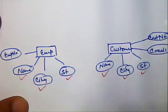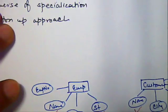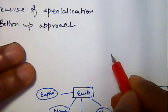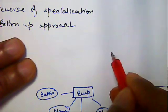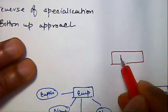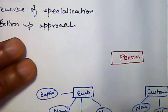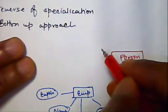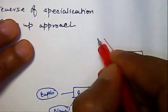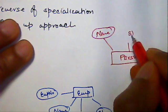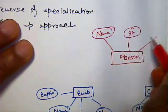So now what we can do is we can go for more general entity which is a person. And this person will have name attribute, street attribute and city attribute.